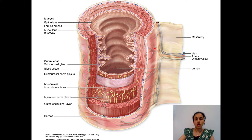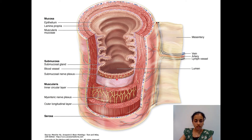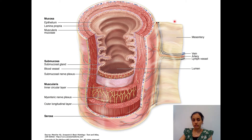This picture shows all four layers with their sub-layers: mucosa with epithelium, lamina propria, and muscularis mucosa; submucosa with submucosal glands, blood vessels, and Meissner's nerve plexus; muscularis externa with inner circular and outer longitudinal layers and myenteric nerve plexus between them; and the outermost serosa — since this section is from small intestine enclosed by mesentery — showing connective tissue with mesothelium.